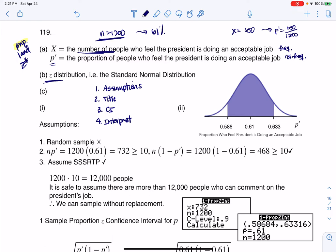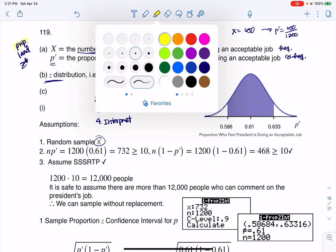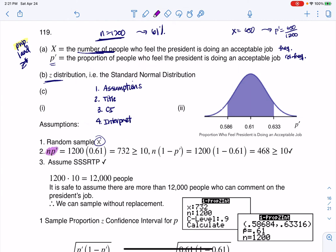For the assumptions, we were not told we had a random sample, so you see the X mark going there. For the normality assumption, you have to check that. You have to check that n*p-prime is greater than or equal to 10, and at the same time, you need to check that n times 1 minus p-prime is greater than or equal to 10. Now, our n was 1,200, and our sample proportion was 61%. So my X, the number of people who said they felt the president was doing a good job, was 732. That's greater than or equal to 10. And on the flip, out of that set of 1,200, it looked like 468 did not feel the president was doing an acceptable job. That's still greater than or equal to 10.